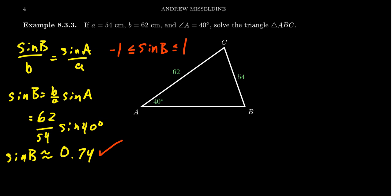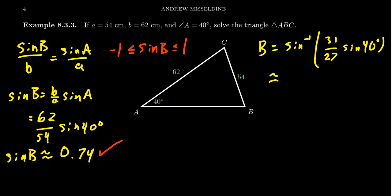To find angle B we use inverse sine on our calculator. B equals sin⁻¹(62/54 × sin(40°)). An approximate value is appropriate here — when we take sin⁻¹(0.74) we get 48 degrees. But when working with the ambiguous case, you could have one or two solutions, so we have to consider both possibilities.